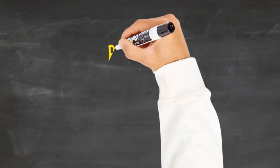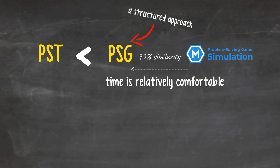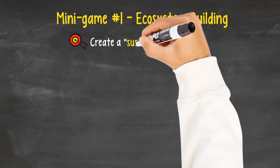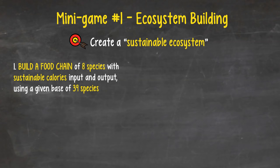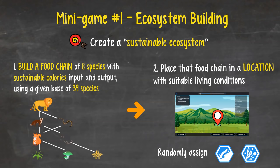McKinsey recommends 35 minutes for the Ecosystem Building mini-game and 36 minutes for the Plant Defense. According to field reports and beta testers of our PSG simulation, yes, we developed a practice mock PSG with 95% similarity, time is relatively comfortable compared to the PST if you have a structured approach. Of course, you will still be focused and make the most out of every minute playing the game. But time will not be the issue, especially after some practice. In Ecosystem Building, the player objective is to create a sustainable ecosystem, which basically consists of two big steps: build a food chain of eight species with sustainable calories input and output using a given base of 39 species, and place that food chain in a location with suitable living condition.